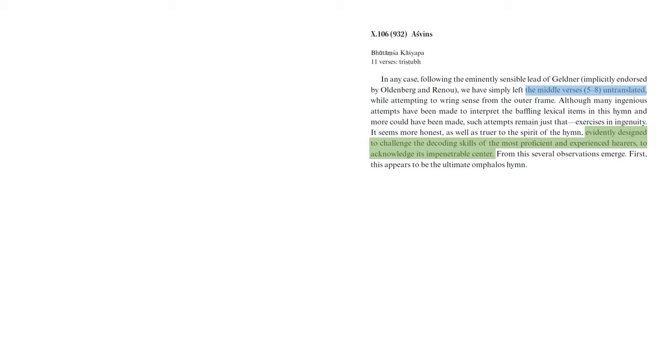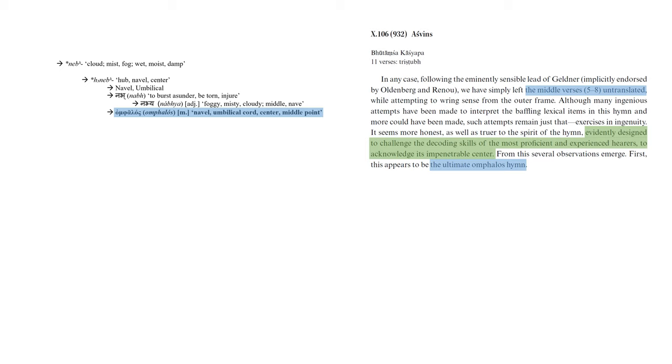From this, several observations emerge. First, this appears to be the ultimate omphalos hymn. The word omphalos means the navel, the umbilical cord, the centre, or the middle point. And comes from the same root that gives us our English words navel and umbilical, bearing the sense hub, navel, and centre. This root also gives us our Sanskrit root nub, to burst asunder, to be torn and to injure, and our word nabya - foggy, misty, cloudy, middle, and navel. Now the imagery of thunderstorms happening in the midspace are not far off with the invocation of this root.